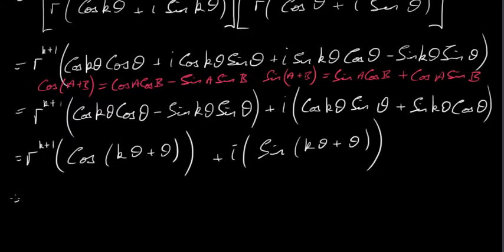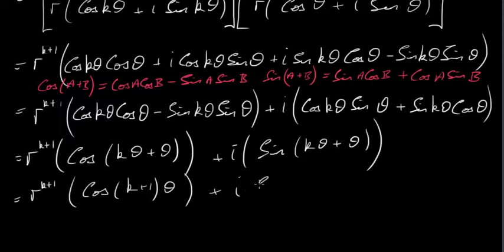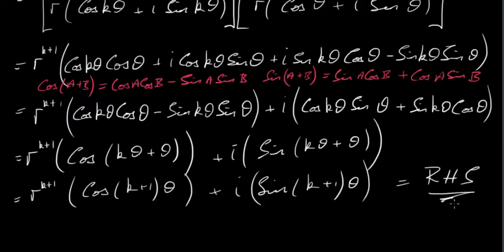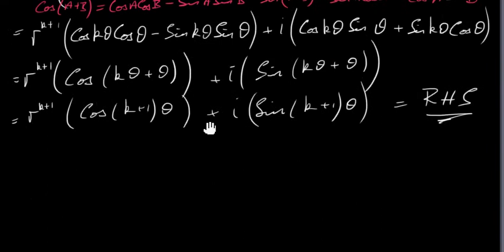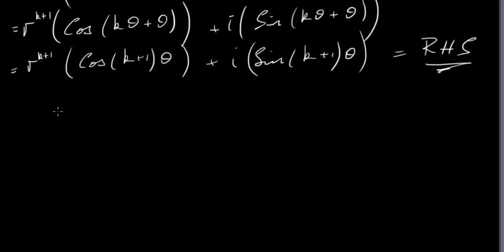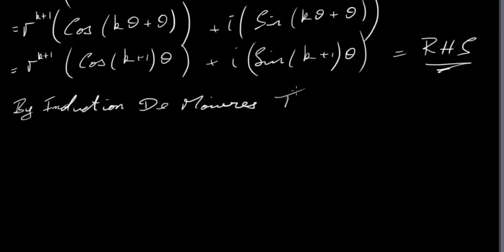So the last line is r^(k+1) · [cos(k+1)θ + i·sin(k+1)θ] — I've just taken θ outside the bracket in kθ + θ = (k+1)θ. This is exactly the right-hand side. I've taken the left-hand side and rewritten it until I got the right-hand side. By induction, De Moivre's theorem is true for n ∈ ℕ — for positive natural numbers.